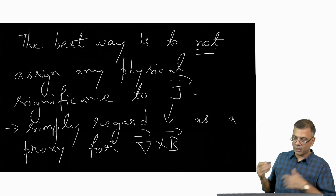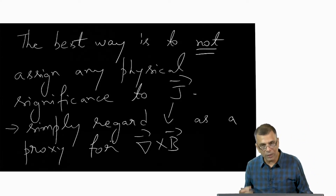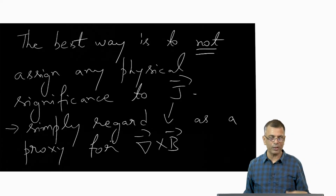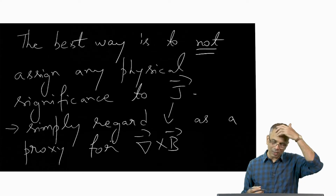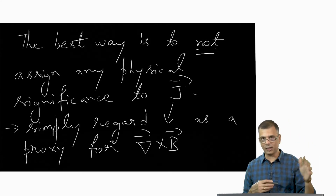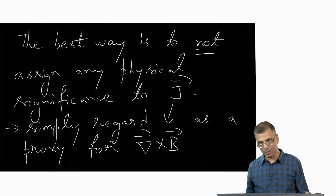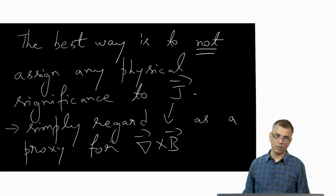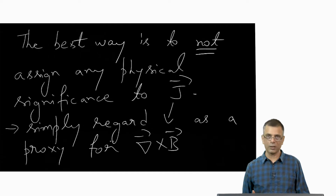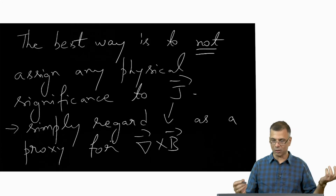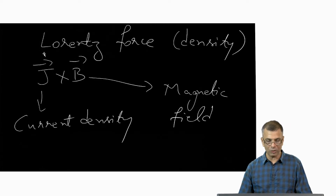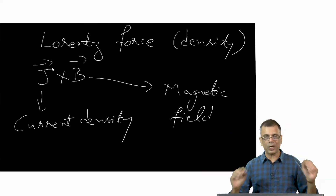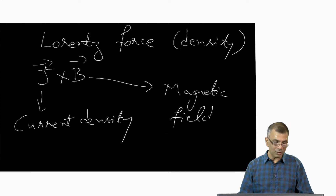The current density has the dimensions of current density and it's perfectly valid to think of it as such. But because of all these oddities — the fact that the fluid is uncharged and yet you need to think in terms of current density — it's best to think of J as a shorthand for curl of B. Wherever you see J, plug in curl of B.